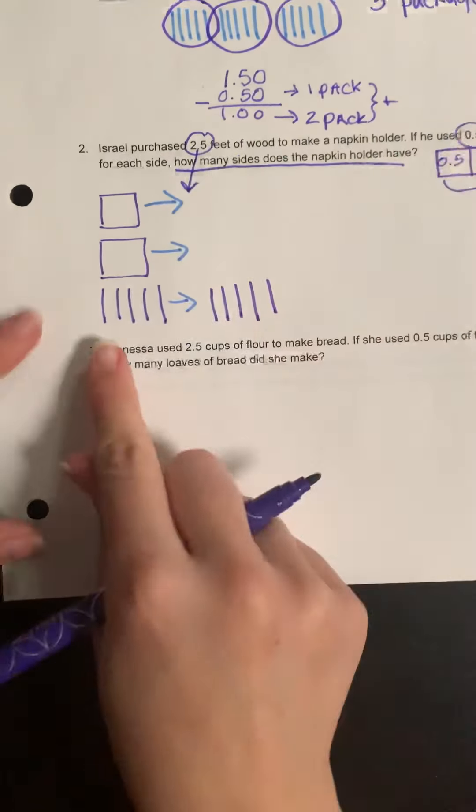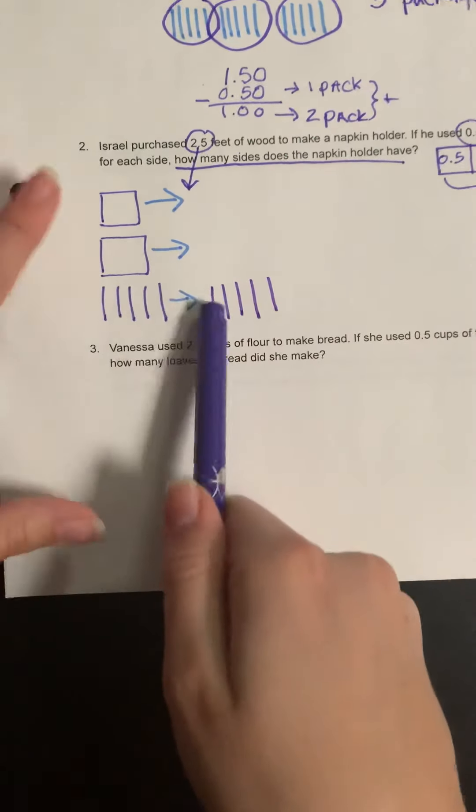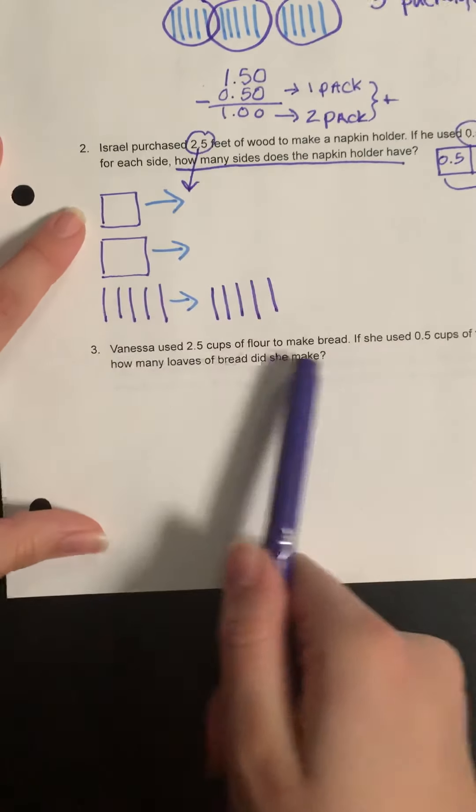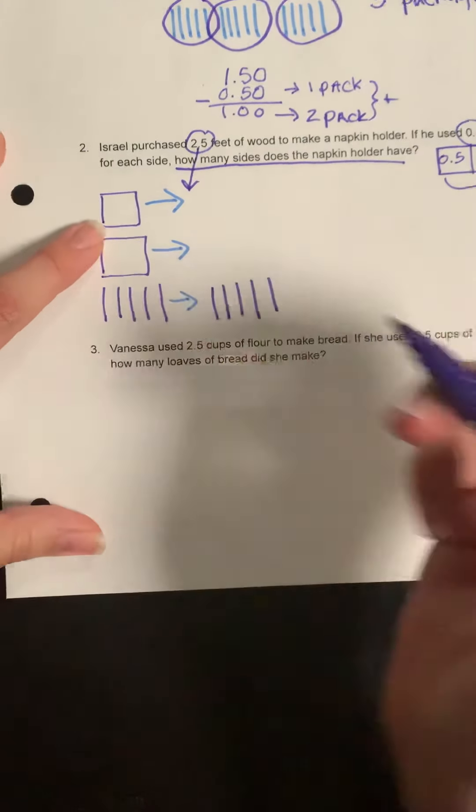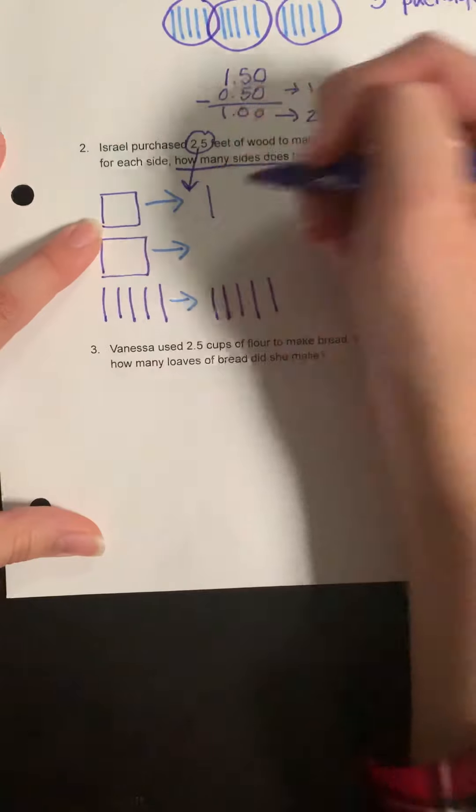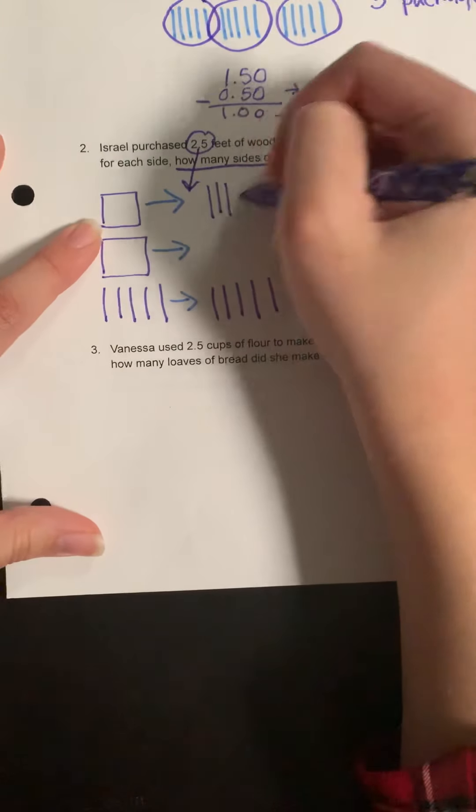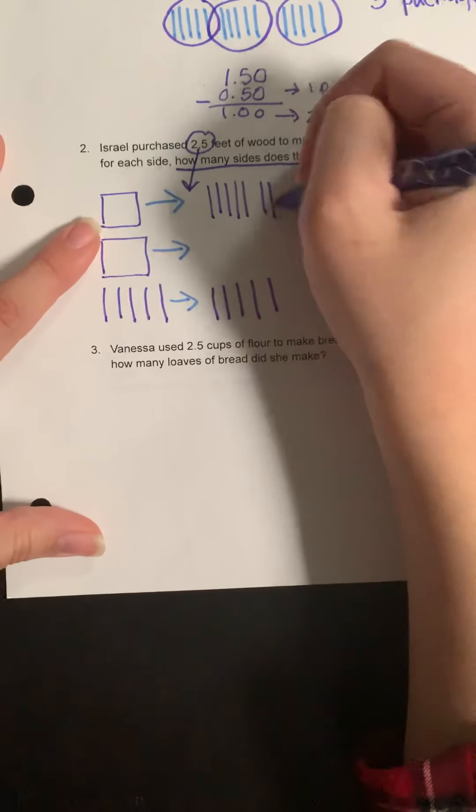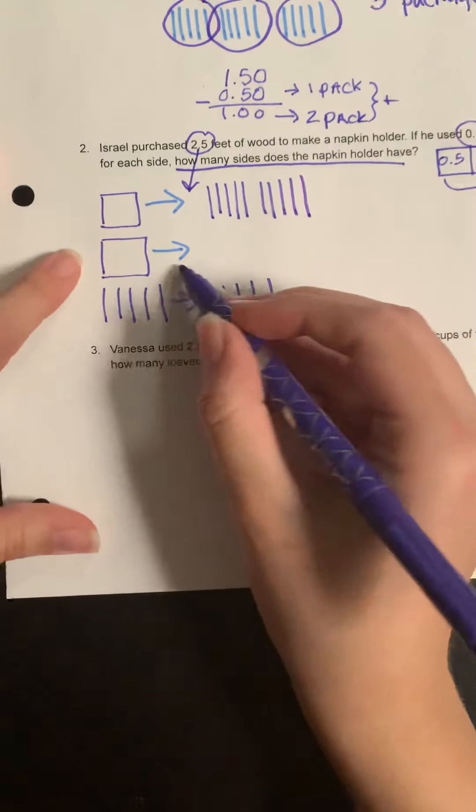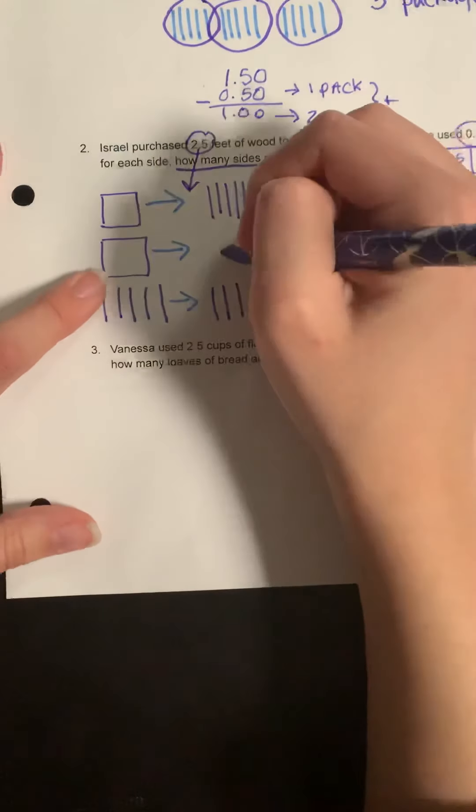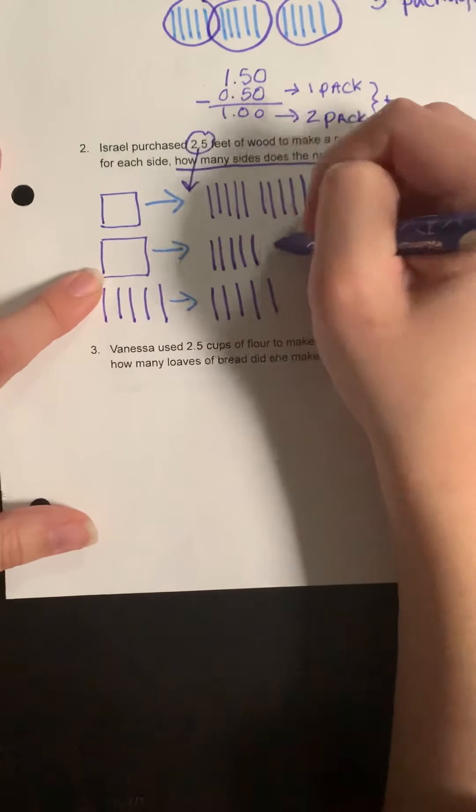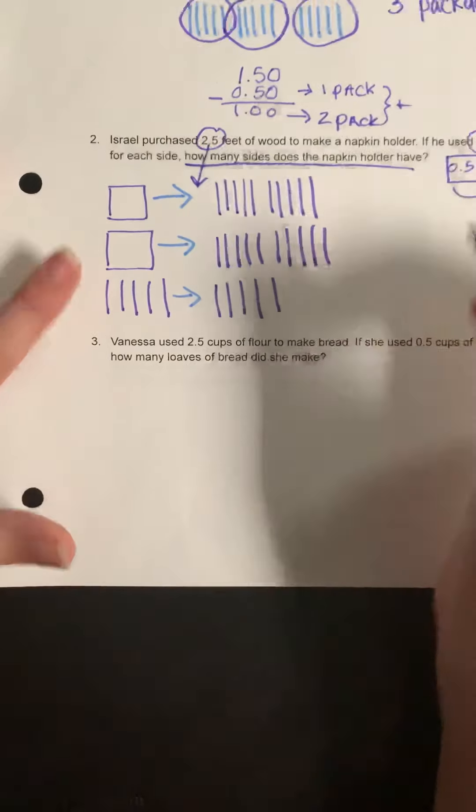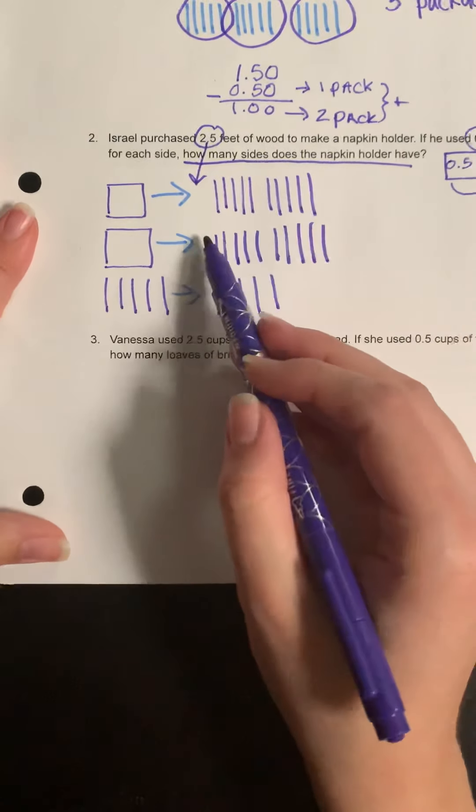So this whole becomes 10 tens rods: 1, 2, 3, 4, 5, 6, 7, 8, 9, 10. And this whole becomes 10 more: 1, 2, 3, 4, 5, 6, 7, 8, 9, 10. And you can see how I kind of still chunked them into groups of 5 because I know that's what I'm working with over here.